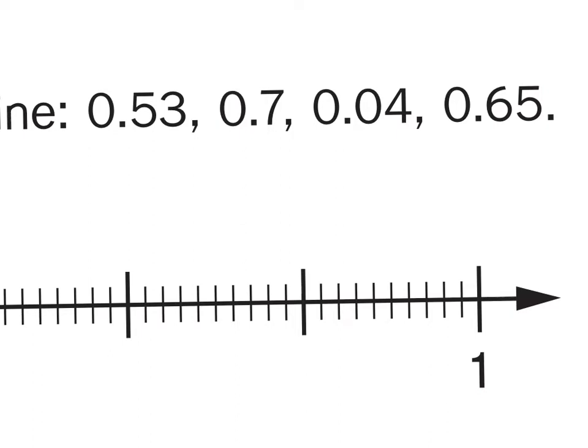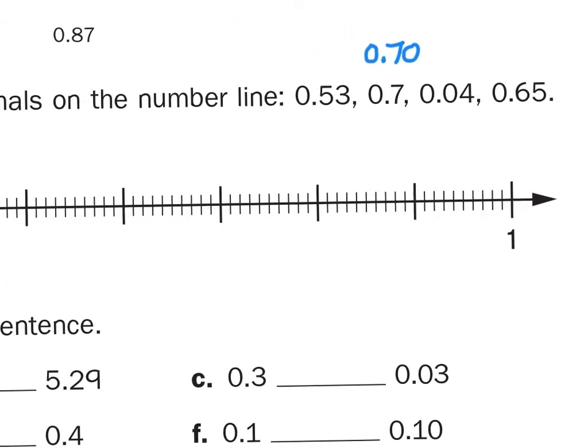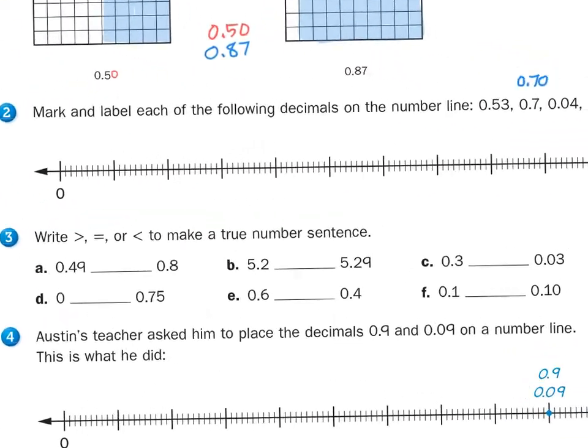So we're just going to go ahead and write that in with the 0. So instead of 0.7 or 7 tenths, we can recognize it as 70 hundredths. So again, if I read these four amounts, 53 hundredths, 70 hundredths, 4 hundredths, and 65 hundredths, that easily helps us sort them from smallest to largest.